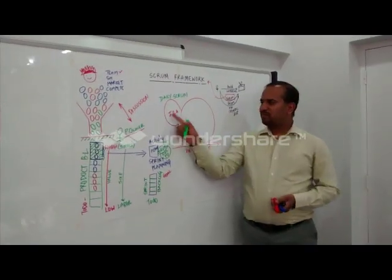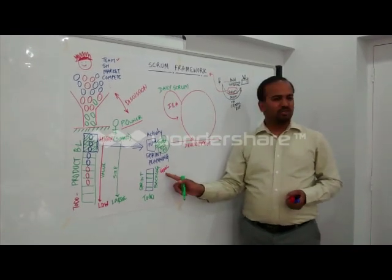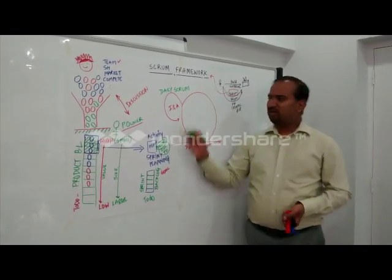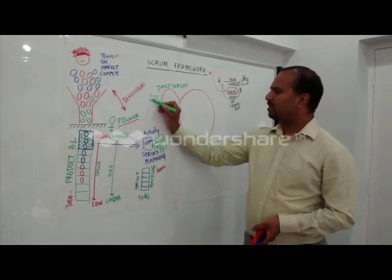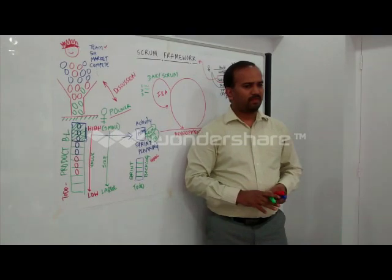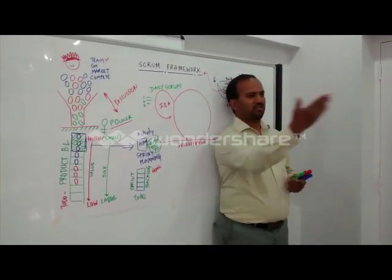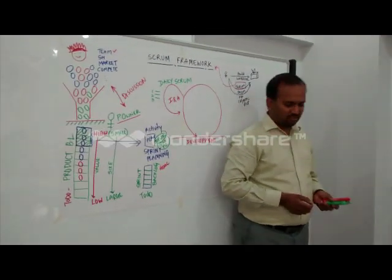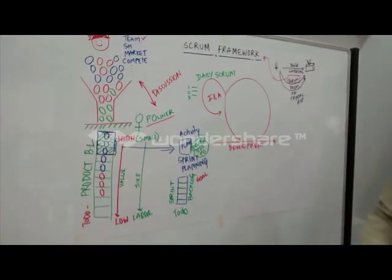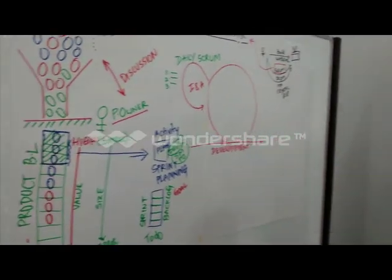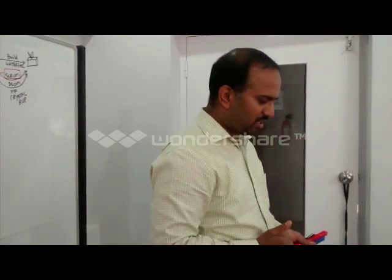The goal of daily scrum is to inspect and adapt to see if we are on par with the goal we set. To do that, teams ask typically three questions: What did I do? What am I trying to do? And are there any impediments? If there is an impediment, I cannot move forward. So I need to remove this impediment before I reach the goal.